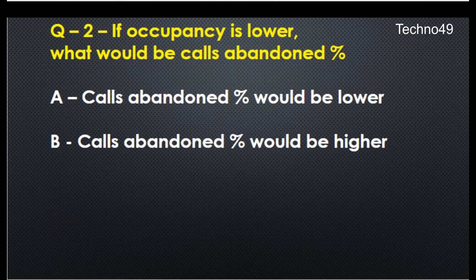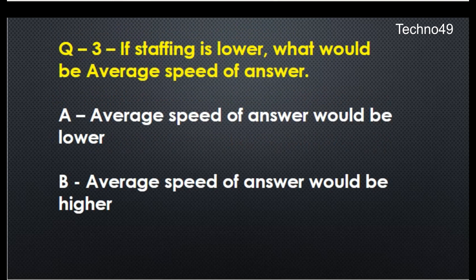Question number three: if staffing is lower, what would the average speed of answer be? The correct answer is that average speed of answer would be higher, because we do not have sufficient headcount to answer the incoming call volume. This increases the average speed of answer, so we need sufficient headcount to minimize it.